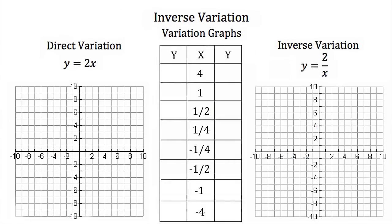Now let's compare the graphs of a direct variation and an inverse variation. We have y equals 2x and y equals 2 over x, and we're given several x-values to plug into both equations. For the direct variation y equals 2x, if I plug in 4 for x, I'll have y equals 2 times 4, which is 8.